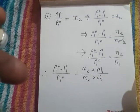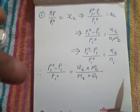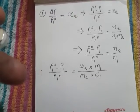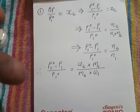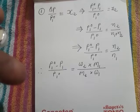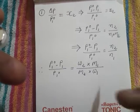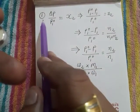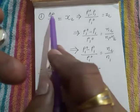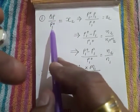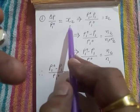Hello friends, in previous lecture we discussed regarding the relative lowering in vapor pressure and some formulas derived based on relative lowering in vapor pressure. Among them, one formula was ΔP upon P₁⁰ is equal to x₂.